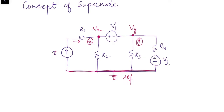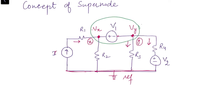The same problem occurs at node Y. We can write the current through R4 and through R3, but we can't write the current through the branch containing the voltage source. So what we need to do is combine these two nodes together to form a super node.